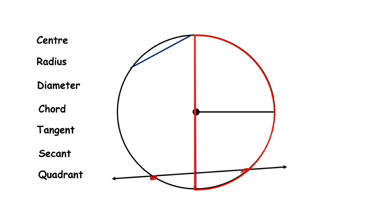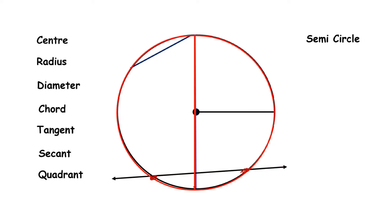Now you can see this half part of the circle. You can see in this figure this is the half part of the circle, and this half part is called a semi-circle. The other half part of the circle is also called a semi-circle.